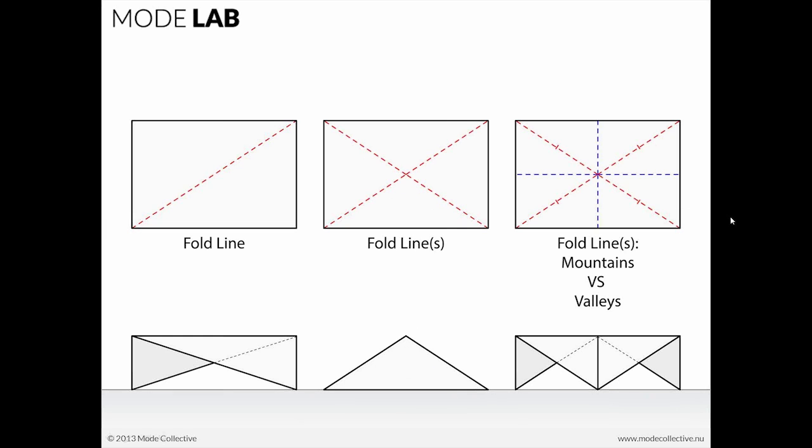When we have two different axes, or actually more than two axes, with both mountain as well as valley folds, you can see that the form once again can change.